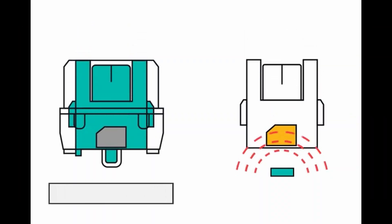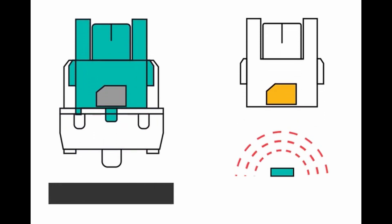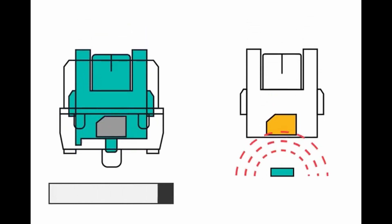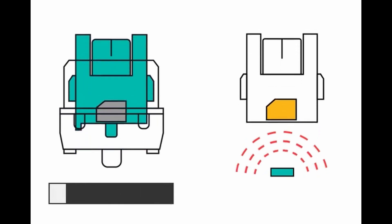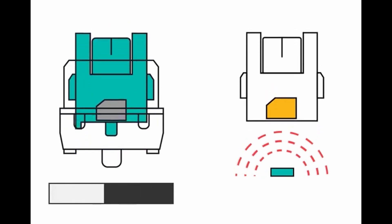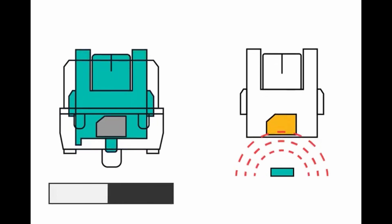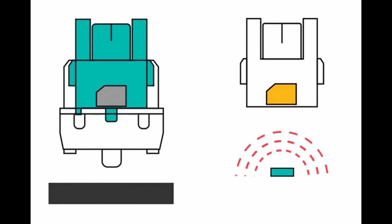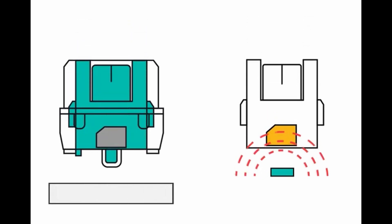Currently, a company called Wooting is selling keyboards that use a full-range analog switch with a hall effect. This works with a magnet that is attached to the stem, which then gets detected by a hall effect sensor underneath the PCB. As the magnet comes closer to the sensor, the stronger the signal is.